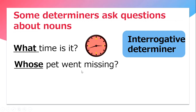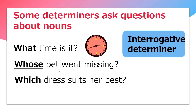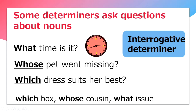Whose pet went missing? Here again, 'whose' is an interrogative determiner which is coming in front of the noun and is used to ask a question. Which dress suits her best? Again, 'which' is an interrogative determiner. The other examples are: which box, whose cousin, what issue.